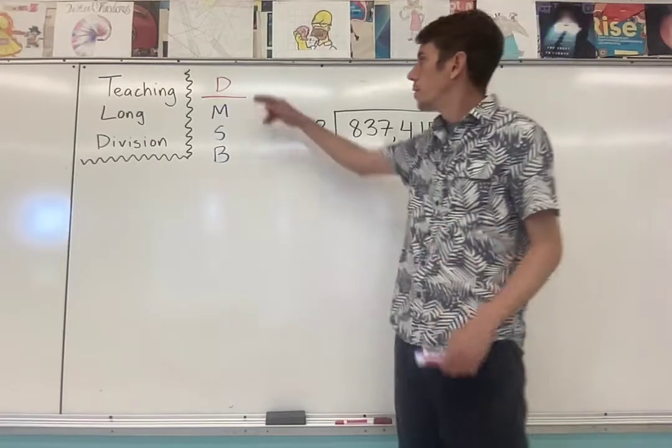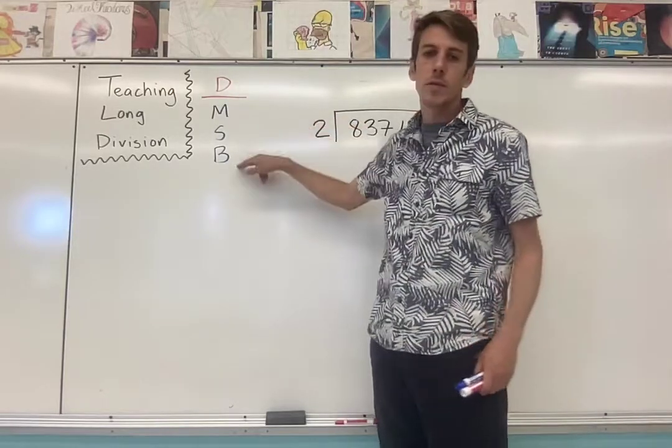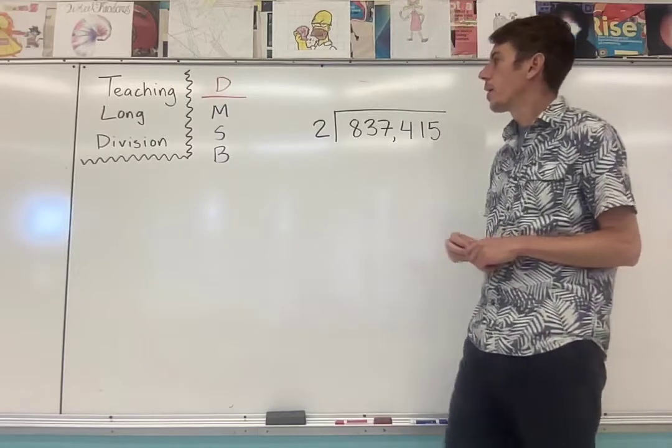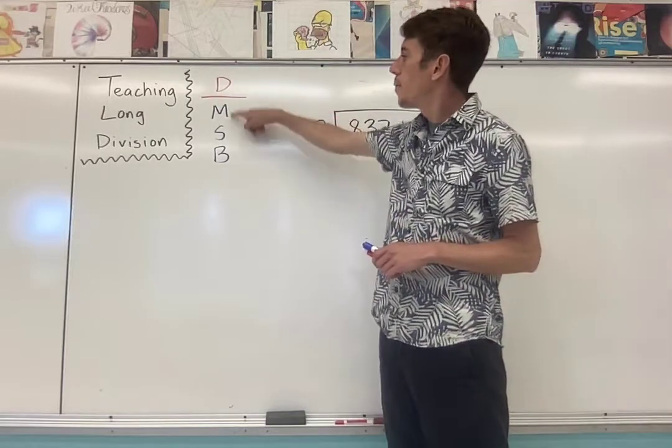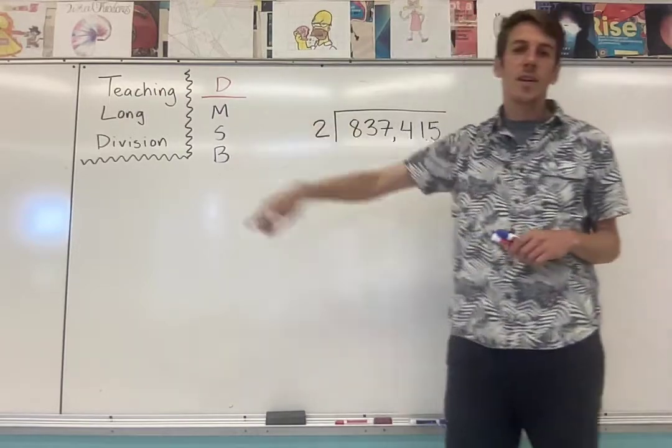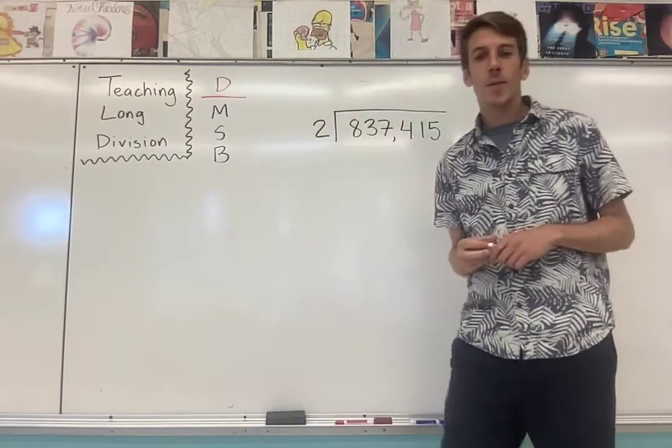First thing I like to do is use an acronym to help students remember the four steps: divide, multiply, subtract, bring down. So you can say dead mice smell bad or does McDonald's sell burgers? I always remember dead mice smell bad.